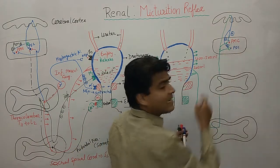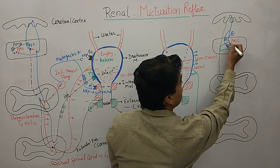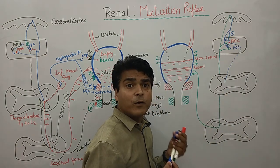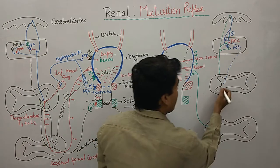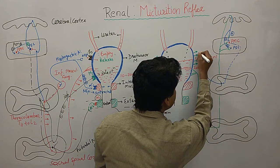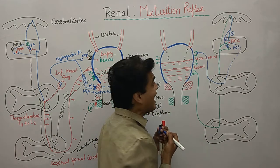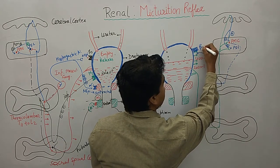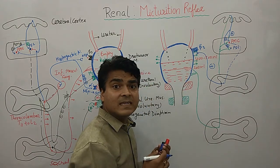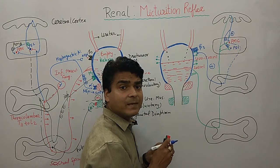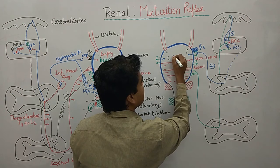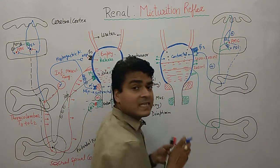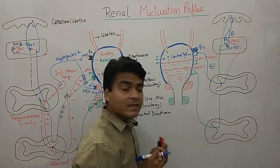The pontine micturition center is now activated and sends its impulses into the thoracolumbar region, making synapse there. It further activates the beta-3 receptors. Due to activation of beta-3 receptors — unlike before when they were inhibited — this area is now contracted. Activation of beta-3 receptors causes contraction of the detrusor muscle.